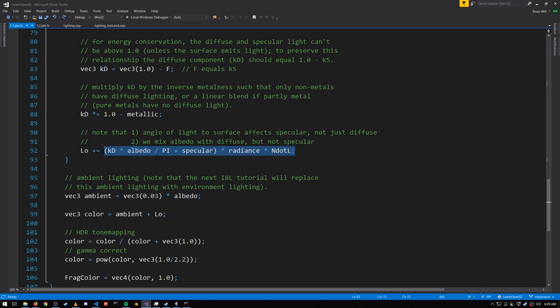Anyway, this is how we get the output luminance for each light, add them all together, and then add them together with the ambient, getting us our output color, to which we apply the tone mapping and gamma correction.